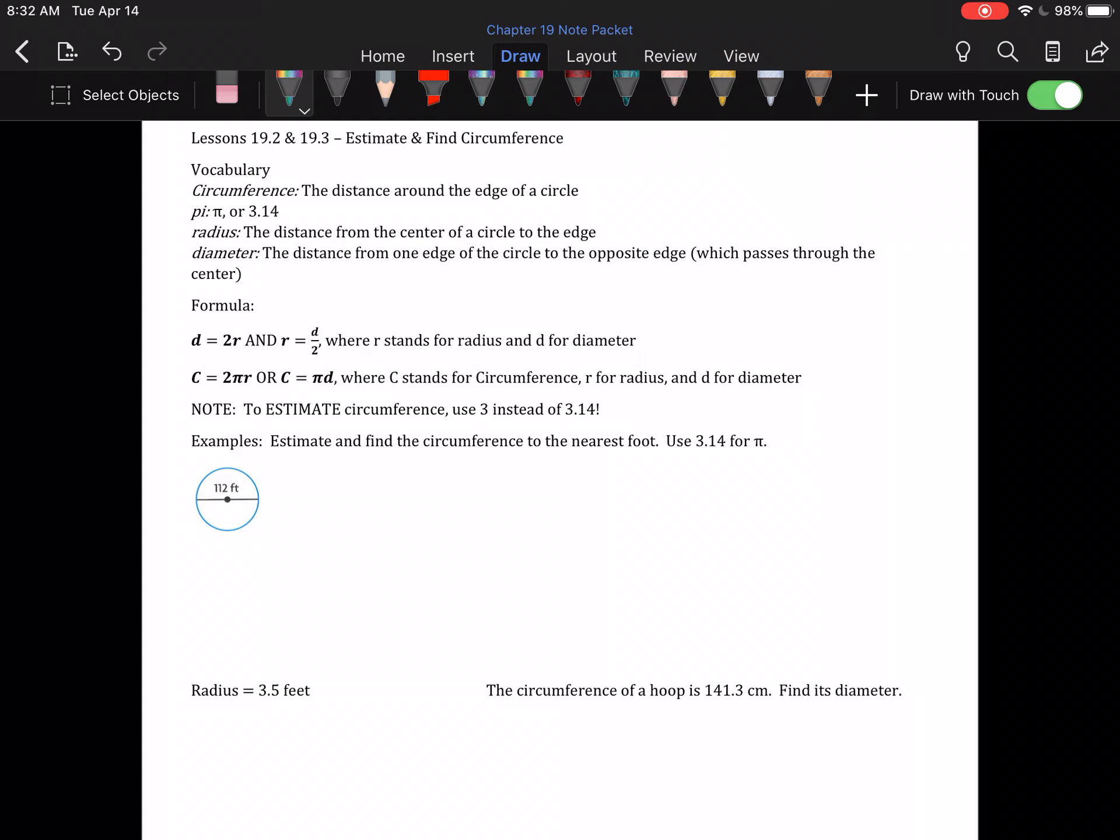So here are some examples. Estimate and find the circumference to the nearest foot. We have a circle. That segment goes edge to edge, passing through the center, so that is a diameter. So I'm going to use C equals pi d. And here d is 112 feet. So to estimate,